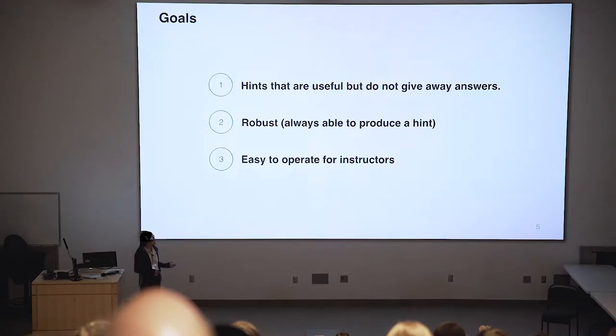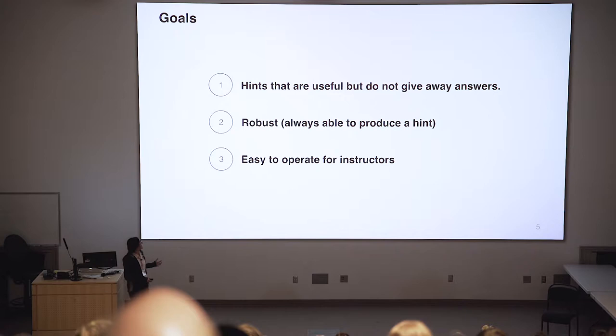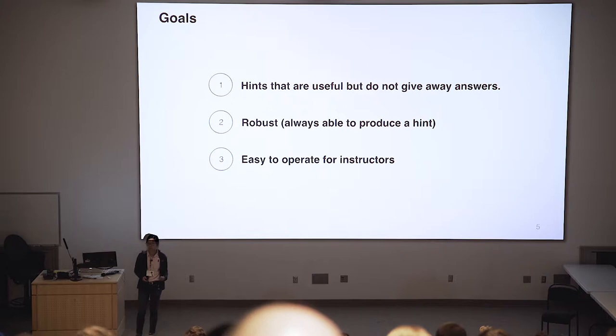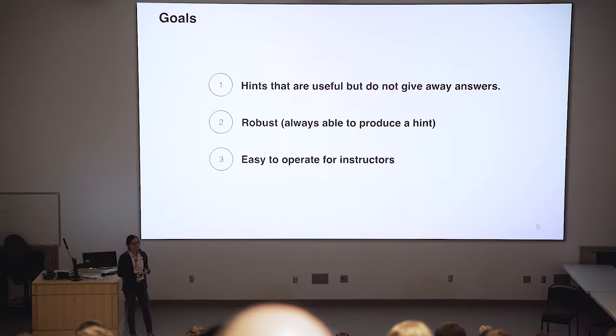To design the system, we have three important goals. The first goal is to make sure that the hints are useful but do not give away answers, because we still want students to learn from doing the assignment themselves. Second, the hint system should be robust, meaning that when students need help the system can generate hints most of the time. And third, the system should be easy to use and maintain by the instructors.